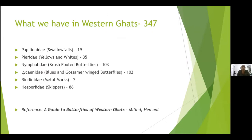As per this book, there are 19 swallowtail species in Western Ghats. Yellows and whites are 35. The brush-footed butterflies and Nymphalidae are 103. Lycaenidae are 102. The metal marks, the judies we can say in South India, have got two judies, and there are 86 skippers for the Hesperidae family. This spans from Gujarat up to the southern tip of Western Ghats, from the Kerala coast up to the eastern slopes of the Nilgiris.